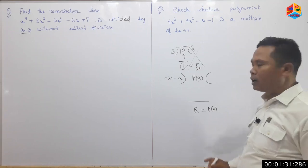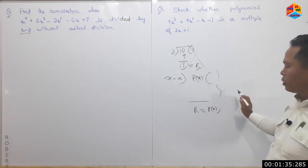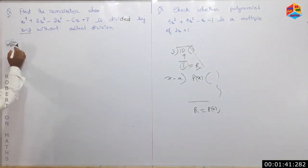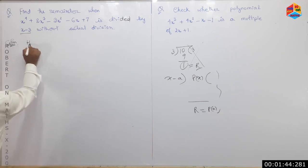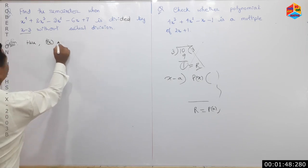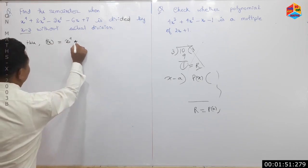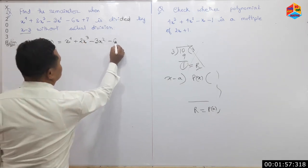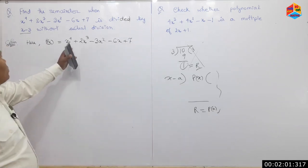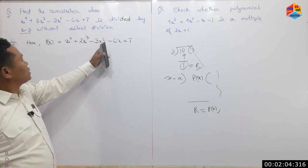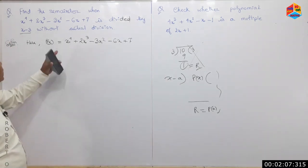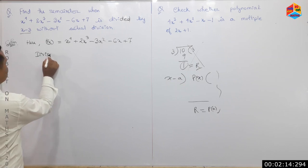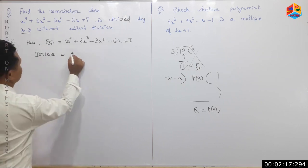The remainder will be P of a. We are going to take a look at the remainder of a. I am going to take a look at the solution. Here, x to the power 4 plus twice x cube minus thrice x squared minus 6x plus 7. We are going to divide the remainder.